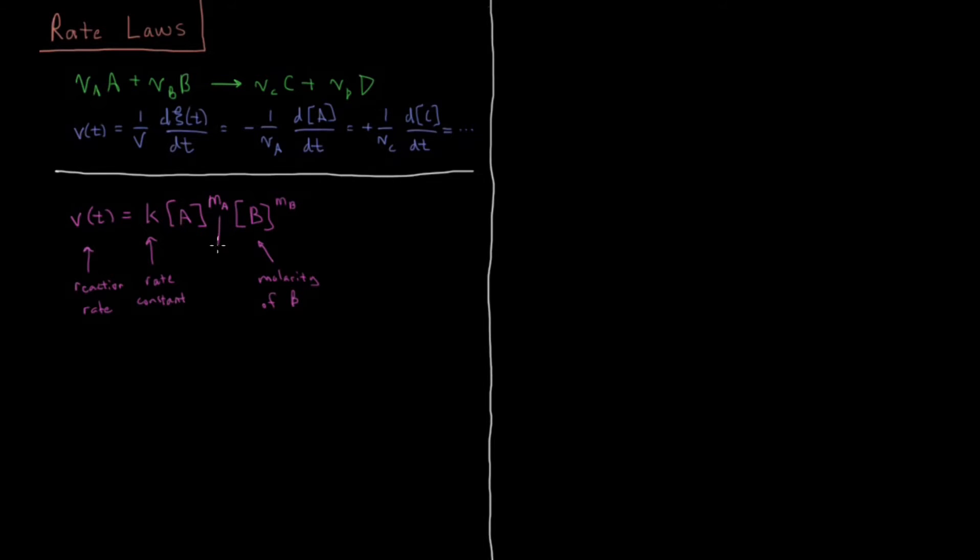Then you have this exponent here which is called the order in A, the rate order. And then this value over here would be the order in B. Of course this is the molarity of A. And then this overall is all called the rate law, the equation which determines what our reaction rate is.